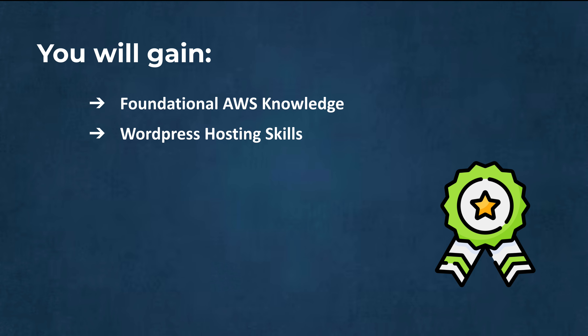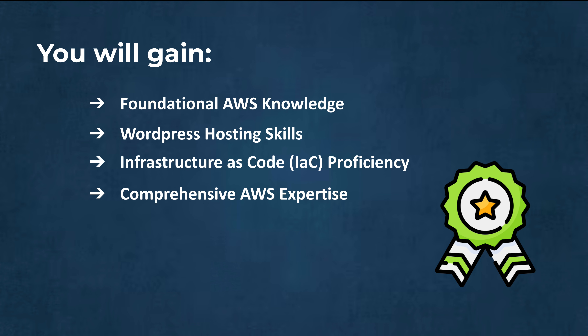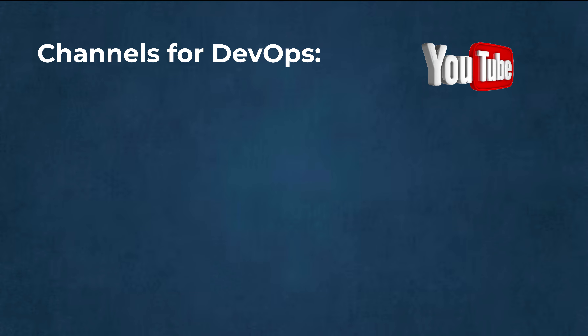You will also gain WordPress hosting skills — setting up and managing a WordPress website on AWS, which is a common task for web developers. You'll develop infrastructure-as-code proficiency using Terraform to automate the creation and management of AWS resources. You'll gain comprehensive AWS expertise in architecting complex web applications, and finally DevOps competence — setting up professional CI/CD pipelines, a crucial skill in modern software development. Overall, these projects will equip you with skills in cloud computing, web hosting, infrastructure management, and DevOps.